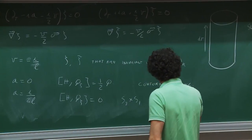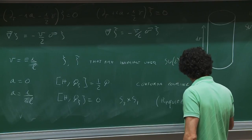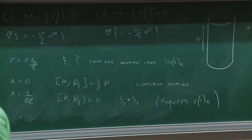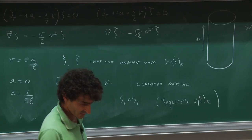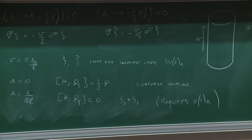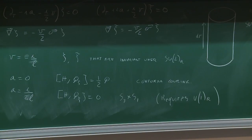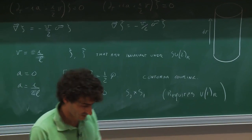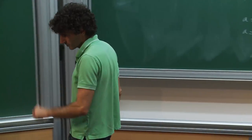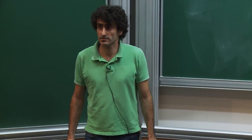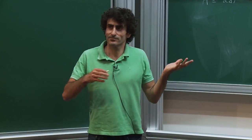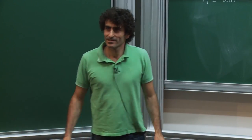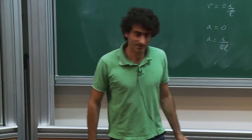S³×S¹ requires a U(1)_R symmetry. If we take super-Yang-Mills theory, this has no U(1)_R symmetry because it's broken by an anomaly, and therefore it cannot be placed on S³×S¹ preserving supersymmetry. So if you were to try to compute the Romelsberger index for super-Yang-Mills, you might get something, but it cannot be interpreted as a genuine index — the coefficients would be negative or non-integer.